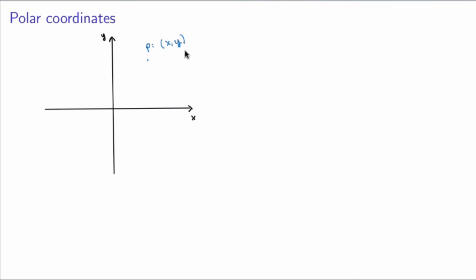So how does it go? Well, the first thing is to realize that for any point on the plane, it must lie on a circle centered at the origin. This point here lies on this imaginary circle, which is centered at the origin. So how can we specify the position of the point? One thing we could do is specify the radius of that circle — I'm going to call that r — and then specify the angle of rotation. By convention, we define the angle as being the angle between this line here and the x-axis. I'm going to define this angle as theta.